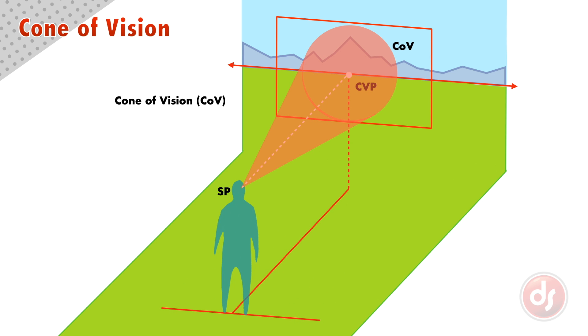The cone of vision is important because anything that falls outside of the cone of vision would technically be outside of the viewer's field of vision and will start to look slightly distorted.